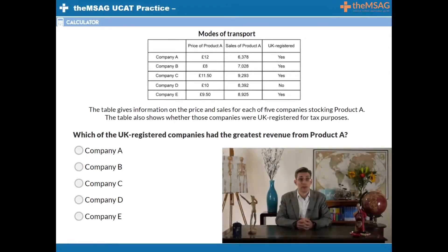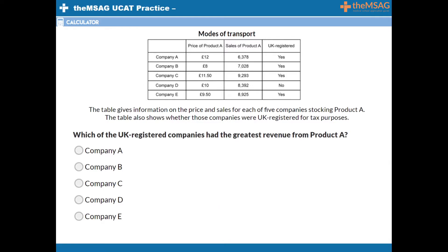The table shown on the screen gives information on the price and sales for each of 5 companies stocking Product A. The table also shows whether those companies were UK registered for tax purposes. Question 2: Which of the UK registered companies had the greatest revenue from Product A? This is a perfect question for guesstimating. Answering it the long way with the calculator would take forever — you'd have to multiply the price by the sales for the 4 UK registered companies, writing down each answer so you didn't forget. This would have been at least 60 to 90 seconds of work. Instead, we shall get the answer in 10 seconds.